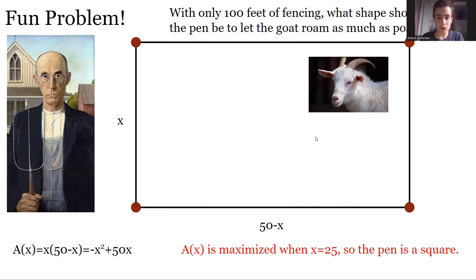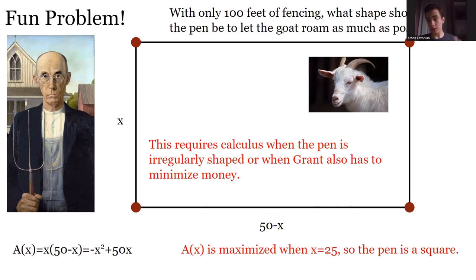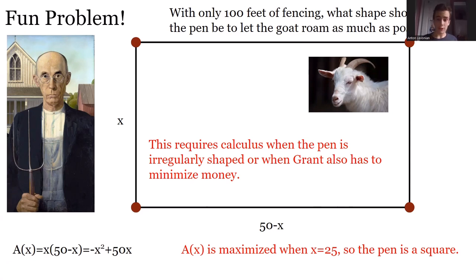We solved this problem without any calculus because the area function happened to be a quadratic. But where calculus would actually be needed is if this function were not a quadratic — if it were a cubic, a sinusoid, or some other complicated function. Also, if Grant needed to minimize costs, that would also require calculus. In general, this problem shows how useful calculus can be when we have a much more complicated area or optimization function in real life.